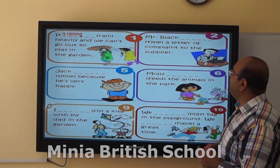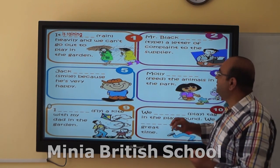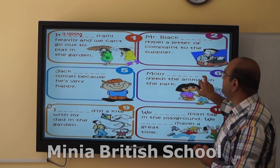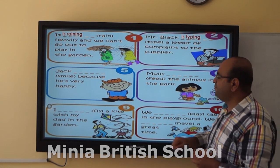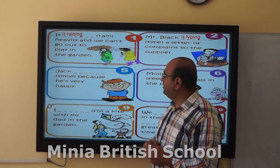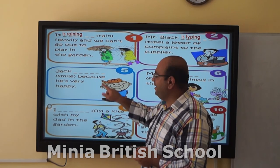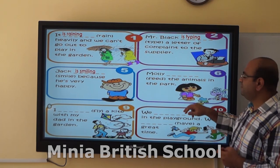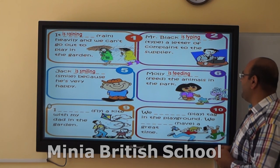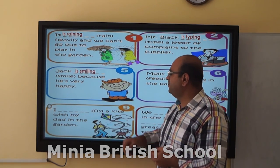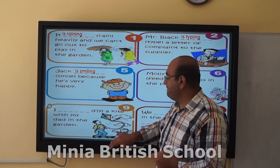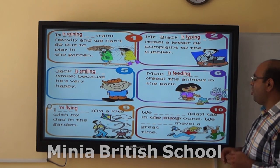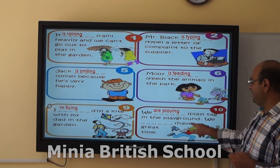Next one: Mr. Blake — type — it ends with E. I will remove the E and put IS — smiling. Molly is feeding the animals in the bar. I — fly — I am flying. We are playing. We are moving.